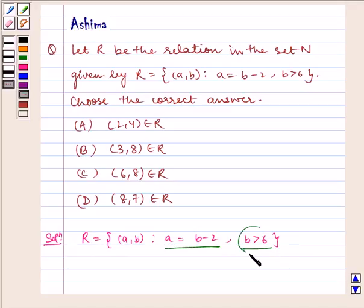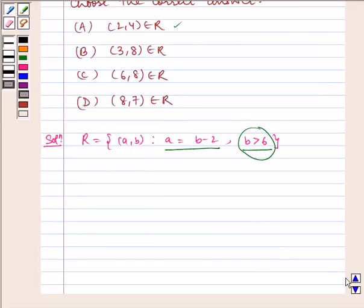By seeing the second condition, we can see that our first option is eliminated because here b = 4, which is less than 6. Therefore, option A is eliminated.